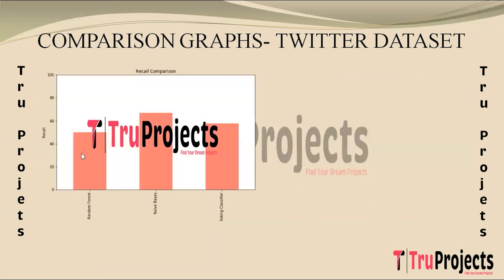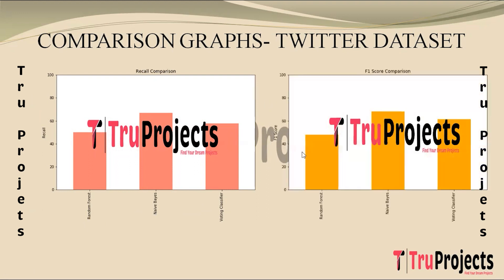The recall scores comparison graph has algorithm names on the x-axis and recall scores on the y-axis. Recall measures the ability to identify all relevant instances, showing how many actual positives were correctly predicted. The F1 scores comparison graph combines precision and recall into a single metric, balancing accuracy and completeness in predictions.